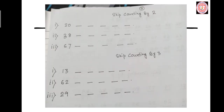Skip counting by 4. 4, 12, 16, 20, 24, 28, 32, 36, 40, 44, 48, 50, 54, 58, 62, 66, 70, 74, 78, 84, 88, 92, 96, 100.